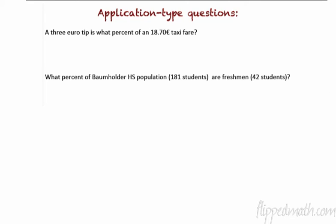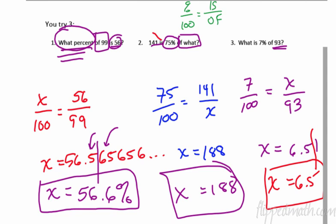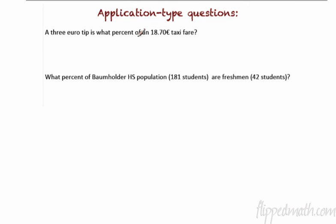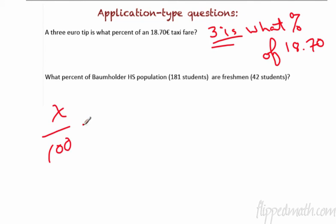No more beautiful music. We can do some application type questions. Let's do that. Three euro tip is what percent of 18.70 euro taxi fare. Now here's my recommendation. Just make yourself a question that looks like these or those. How hard is that? Let's just make a question that looks like one of those. A three euro tip is what percent of 18.70? So you want to know three is what percent of 18.70. That's what you want to know. So I'll do the work down here because there's more room. So three is, and it's a what percent, so it's X out of 100. And the three is the is. And then 18.70. Voila. And then if you can cross multiply and solve that one, you're all done.